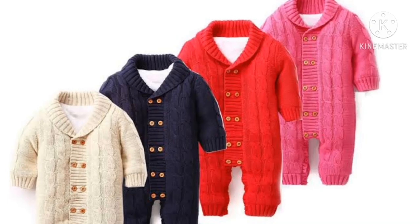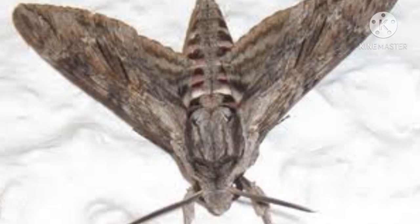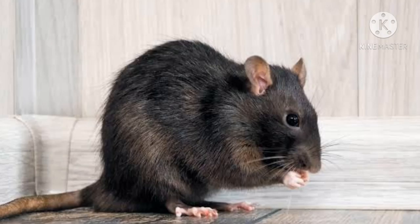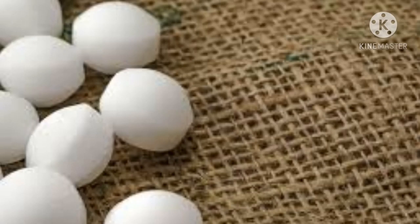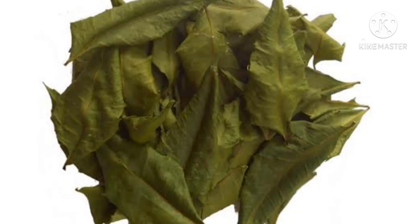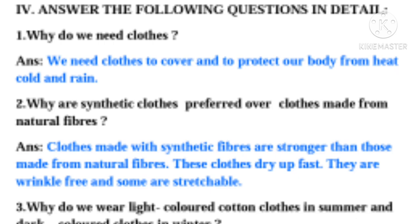Proper care must be taken to have a long life for clothes. Colored clothes should be dried in shade to avoid fading. Woolen and silk clothes are soft and delicate and get attacked by insects such as moths, silverfish and rats. So we must put mothballs and dried neem leaves in these clothes while storing them.